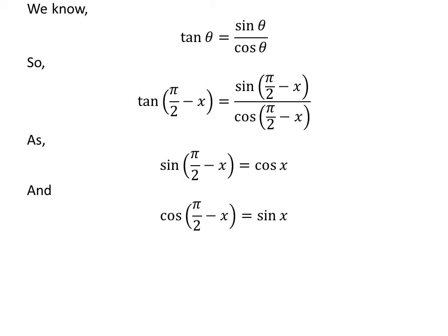We also know the trigonometry identity cosine of half of pi minus x is equal to sine of x. The proof of this trigonometry identity has been explained in the video appearing in the upper right corner. The link of the video has also been mentioned in the description section. Let us apply the above identities in the above expression of tangent of half of pi minus x.